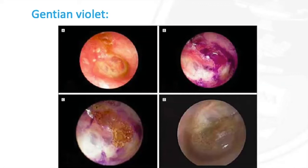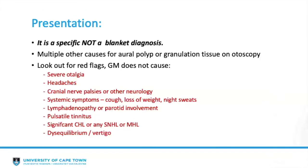In this series of images, image A shows the pre-application appearance, image B shows the gentian violet staining and demarcation of the granular myringitis, image C shows the tympanic membrane post-laser resurfacing, and image D shows the tympanic membrane at one month follow-up. It is paramount to differentiate granular myringitis from other causes of chronic otorrhea, polypoidal tissue in the external auditory canal, and on the tympanic membrane — it should never be used as a blanket diagnosis.